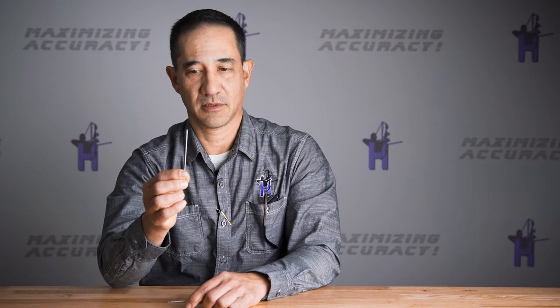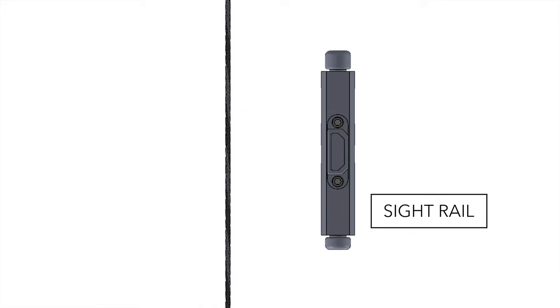Let's start with the first axis. Think of first axis as the vertical axis in your bow system — that's your bowstring. If this is your bowstring, you want your sight or the rail on your sight to be set parallel with the bowstring. That's the first axis.